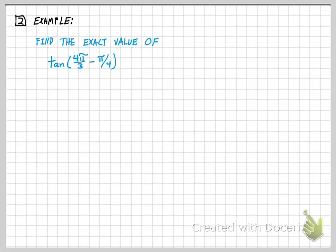Let's look at an example. Find the exact value of the tangent in the difference of these two angles. Pulling my formula out, I'm going to have the tangent of 4π/3 minus the tangent of π/4 divided by 1 plus the product of these two tangents, tangent of 4π/3 times tangent of π/4.